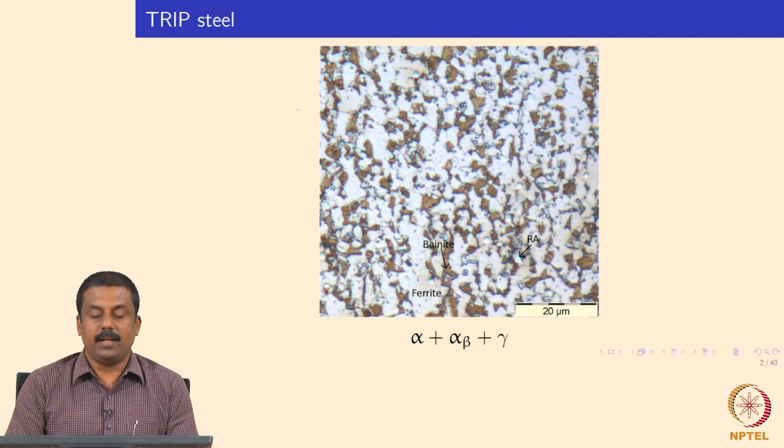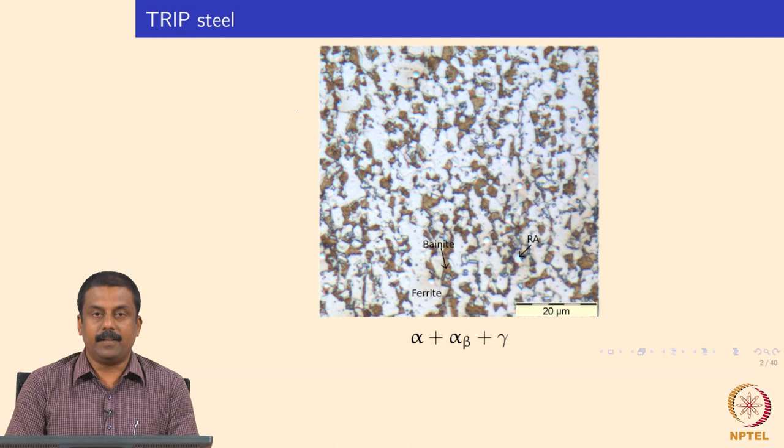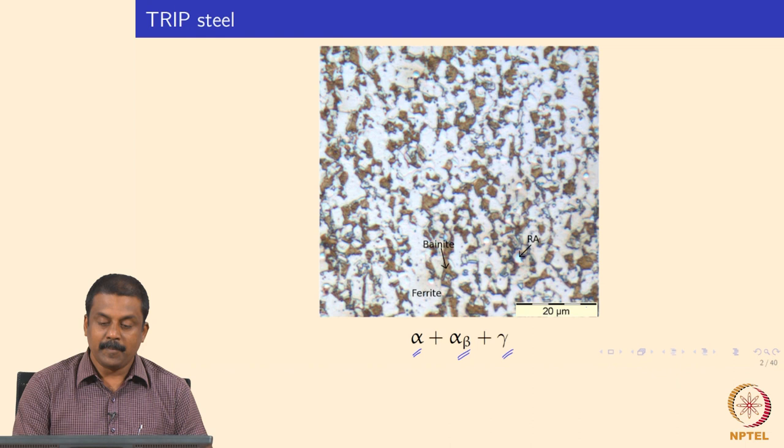The TRIP steel base material microstructure is shown in this slide. As we have seen, TRIP steel typically contains three phases: ferrite, or bainitic ferrite, and some amount of retained austenite. Generally, this retained austenite gives TRIP steel its superior properties — when the retained austenite transforms to martensite upon loading, you get enhanced plasticity as well as increasing strength.